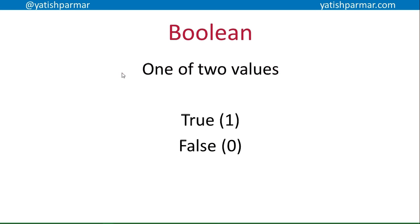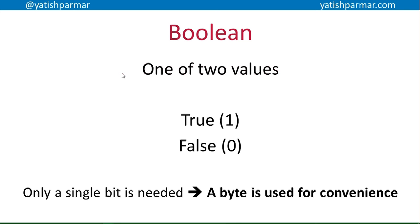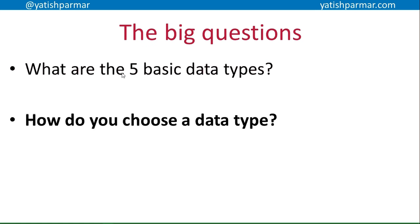Number five is booleans. Booleans represent one of two values: true or false — true usually indicated by 1, false by 0, though it depends on the programming language. Most people ask why a boolean takes up so much memory if you only need a single bit. The answer is we use a byte for convenience — it'd be too difficult to address individual bits in memory, so we address a byte storing the value instead.